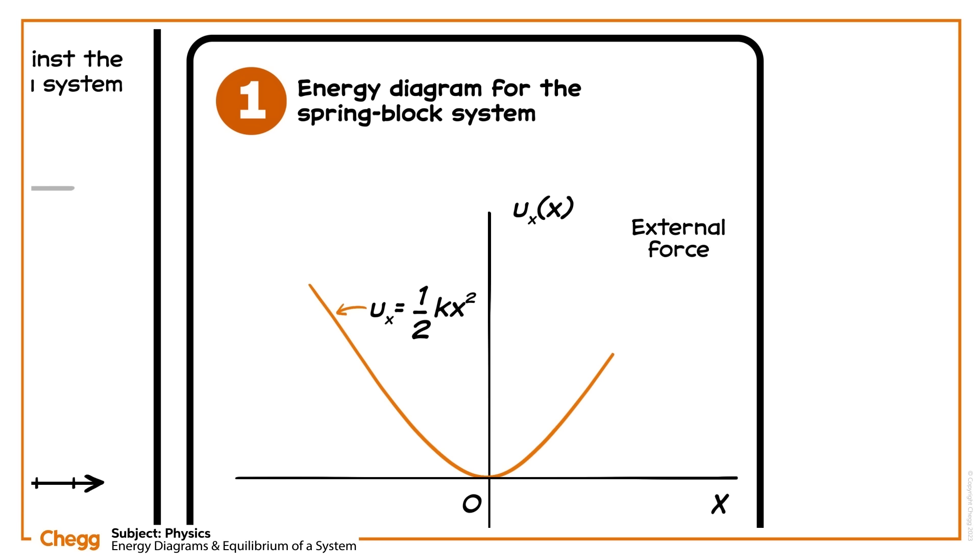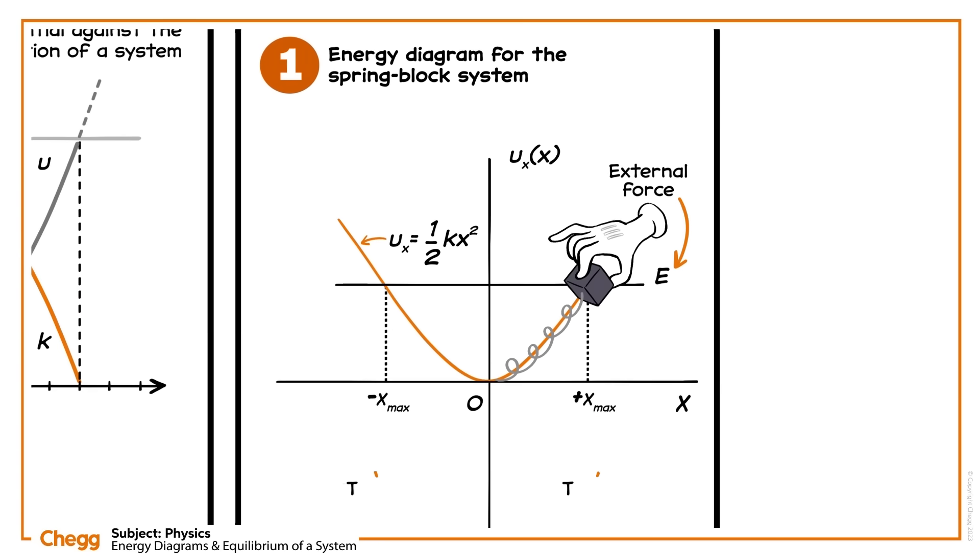For a given energy e, the spring block system will oscillate between two points, negative x max and positive x max. The spring, like any object in oscillating motion, won't ever go past the turning points that we can see on this graph.